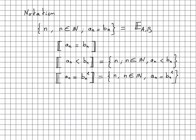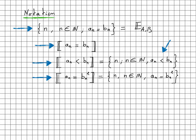Let me introduce some notation. The set of integers n such that a_n = b_n was written E(A,B). There is another helpful notation: writing [a_n = b_n] between square brackets for the same set. This generalizes to other statements — for example, [a_n < b_n] refers to the set of integers n such that a_n < b_n, and [a_n = b_n²] is the set of integers n such that a_n = b_n².